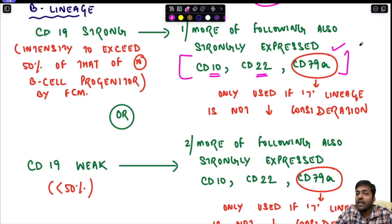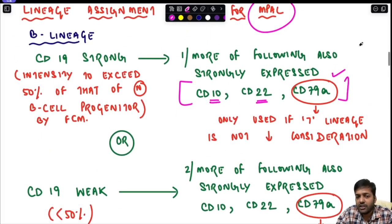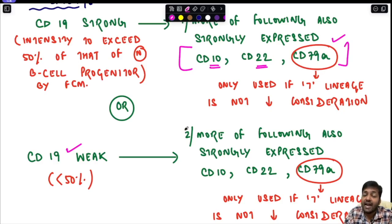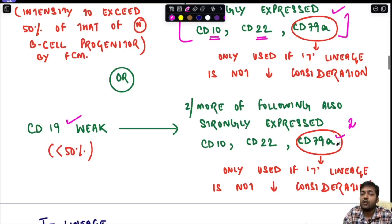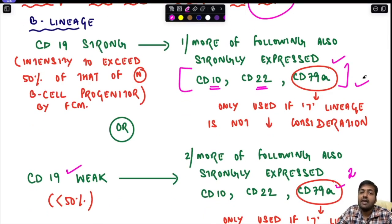If CD19 is weak — that is, its intensity is less than 50% of the normal B cell progenitor — then at least two or more of CD10, CD22, and CD79a must be strongly expressed. Again, CD79a should only be used if T lineage is not under consideration. Only when these criteria are fulfilled do you assign a cell to B lineage.